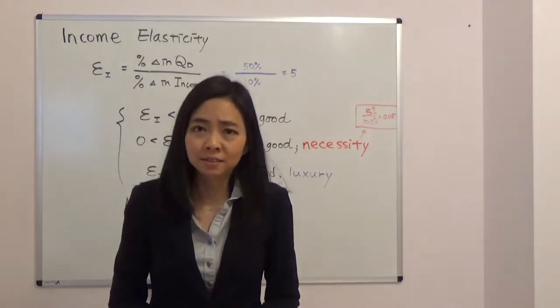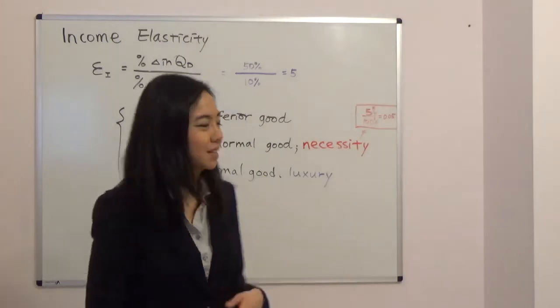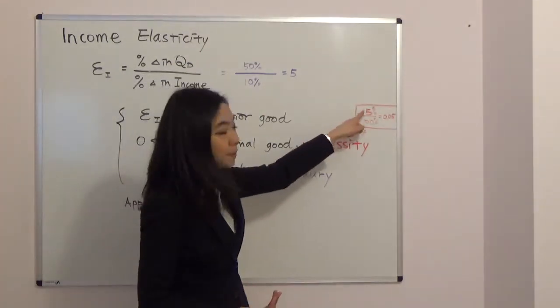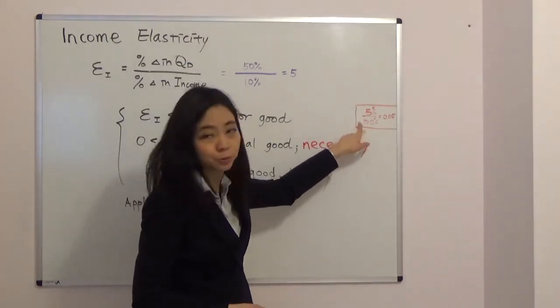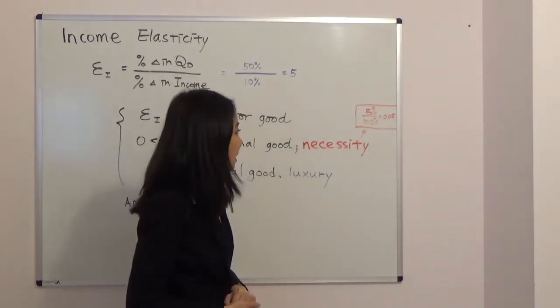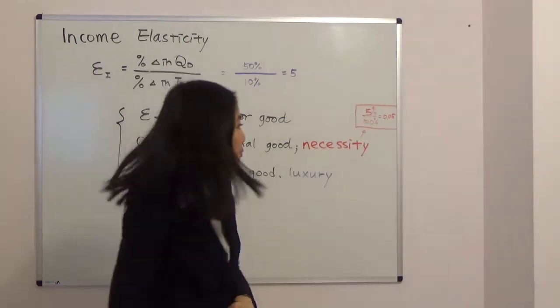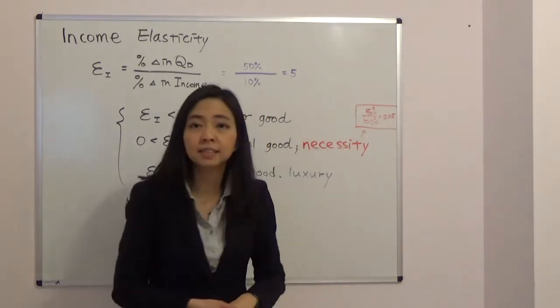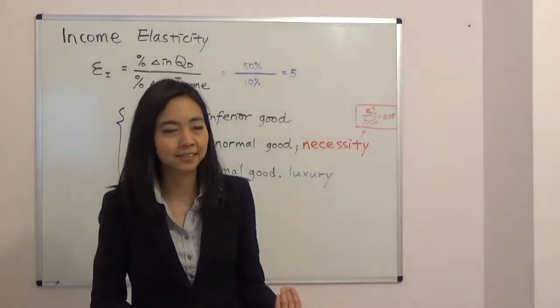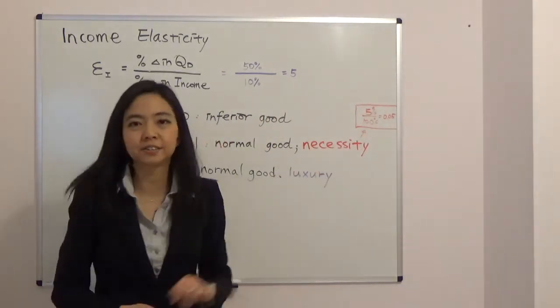You probably are going to eat a little more pasta but not twice as much. So suppose you eat 5% more pasta after you get a 100% raise, then your income elasticity for pasta will be just 0.5. You can see it's greater than zero but it's less than one. That tells you the good is a necessity.